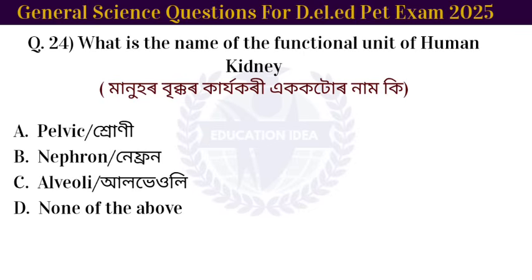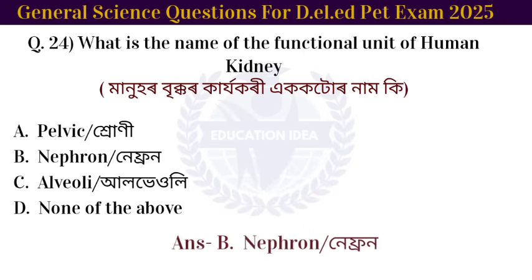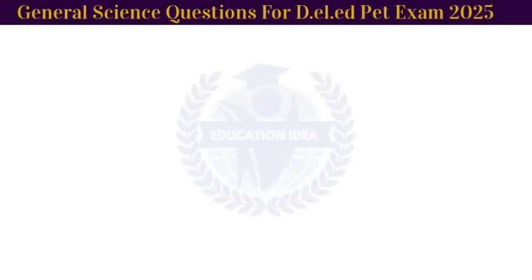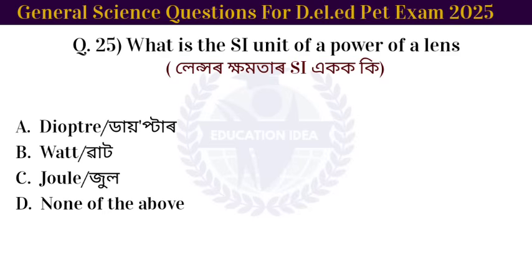Next question: what is the name of the functional unit of the human kidney? The answer is nephron.